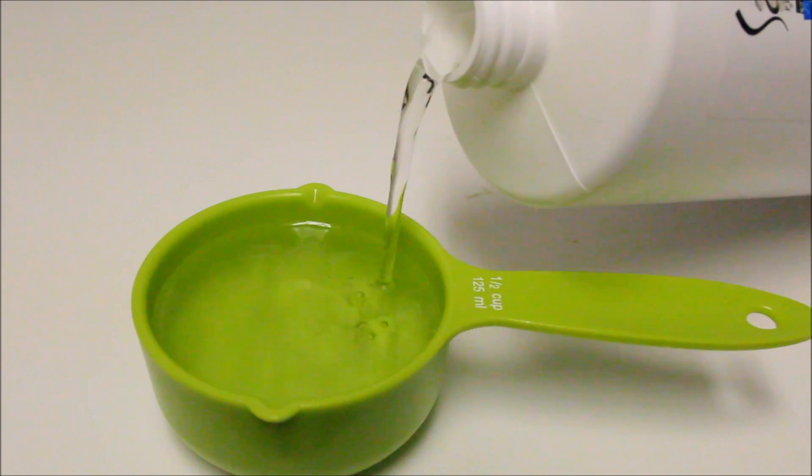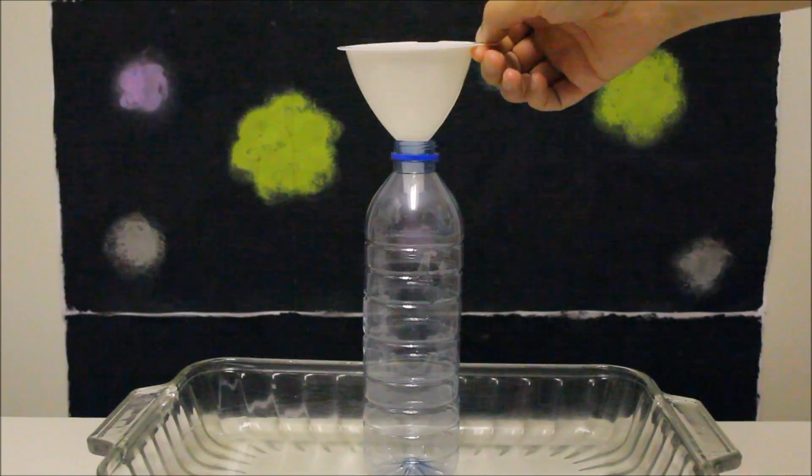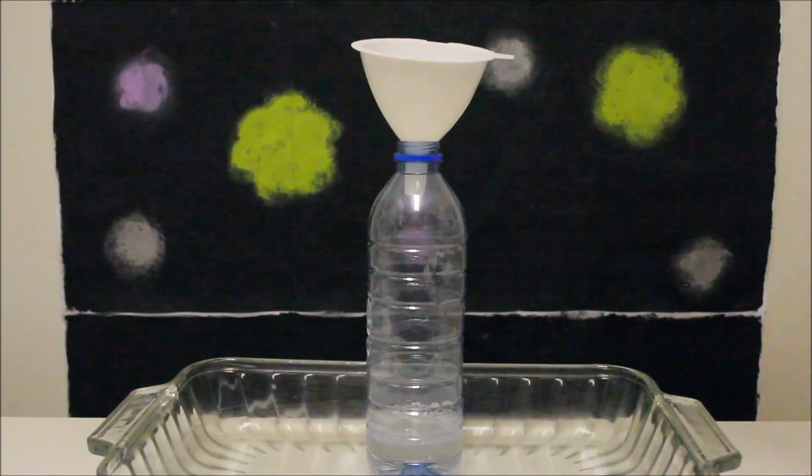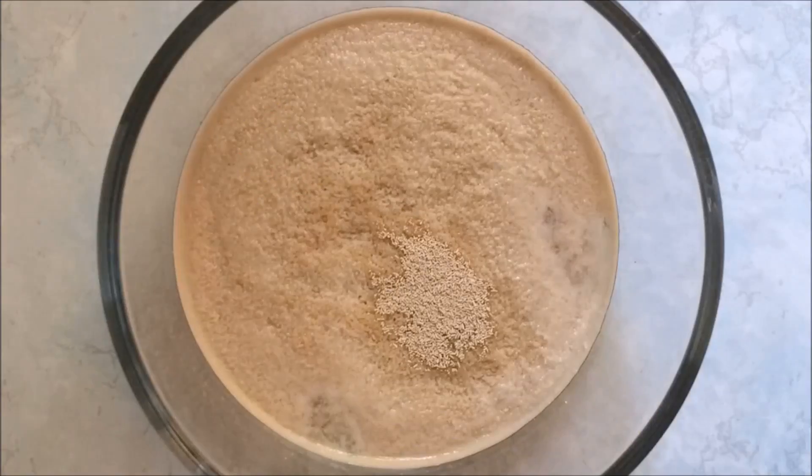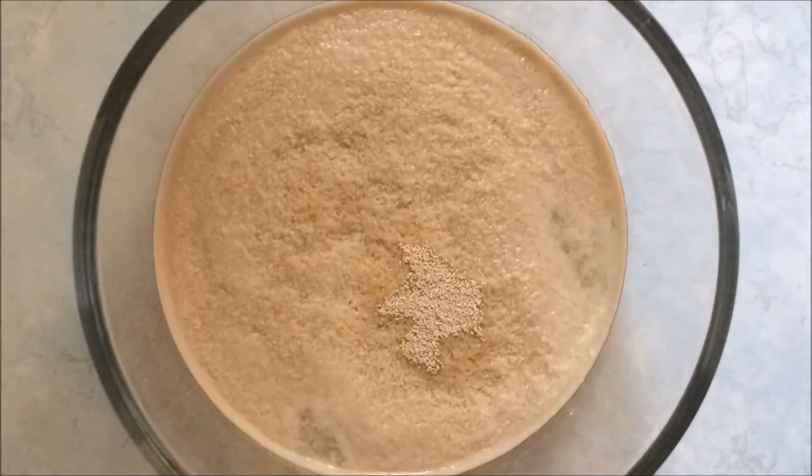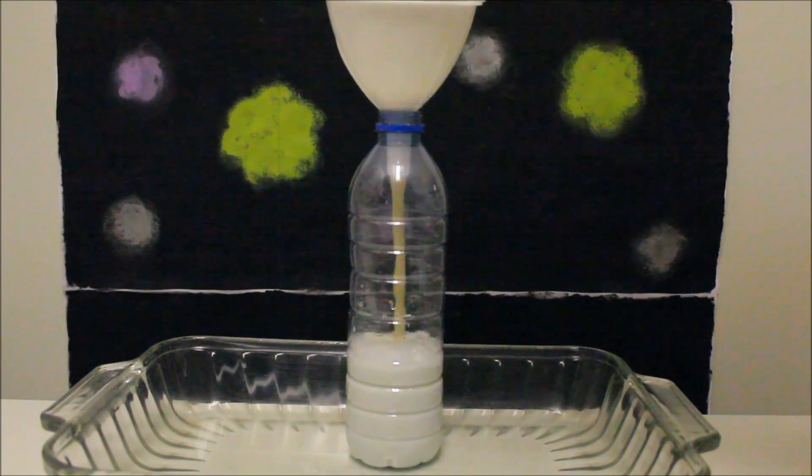Meanwhile, let's pour half a cup of hydrogen peroxide into the water bottle and add a little bit of soap. Now that the yeast is all frothy, let's add it to the water bottle.